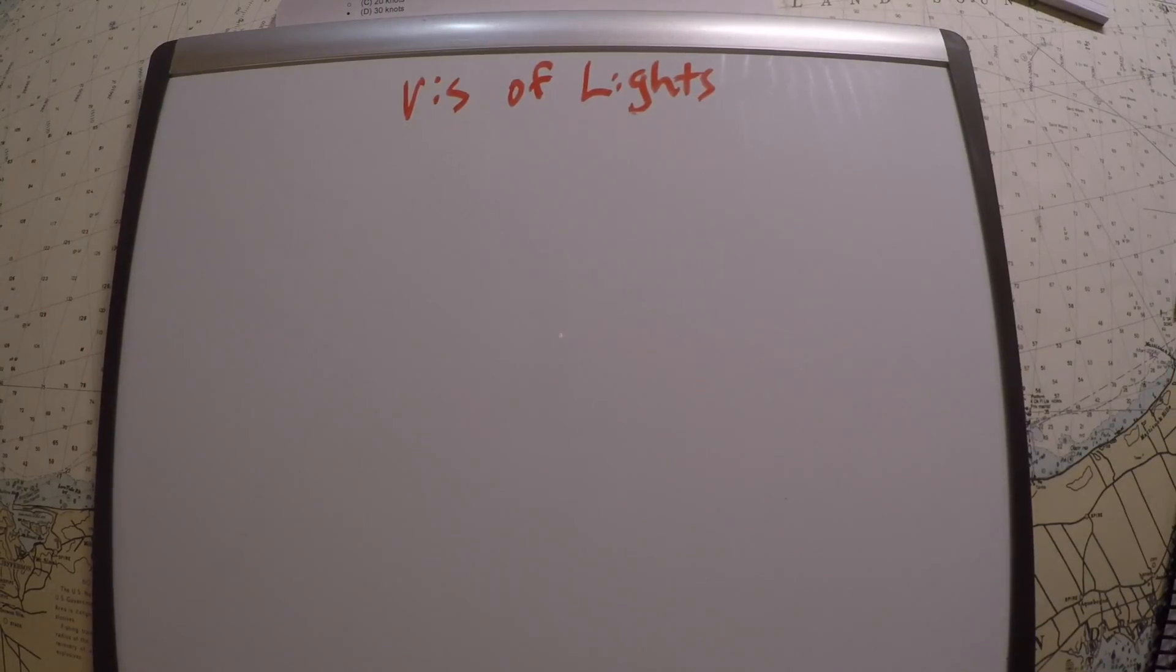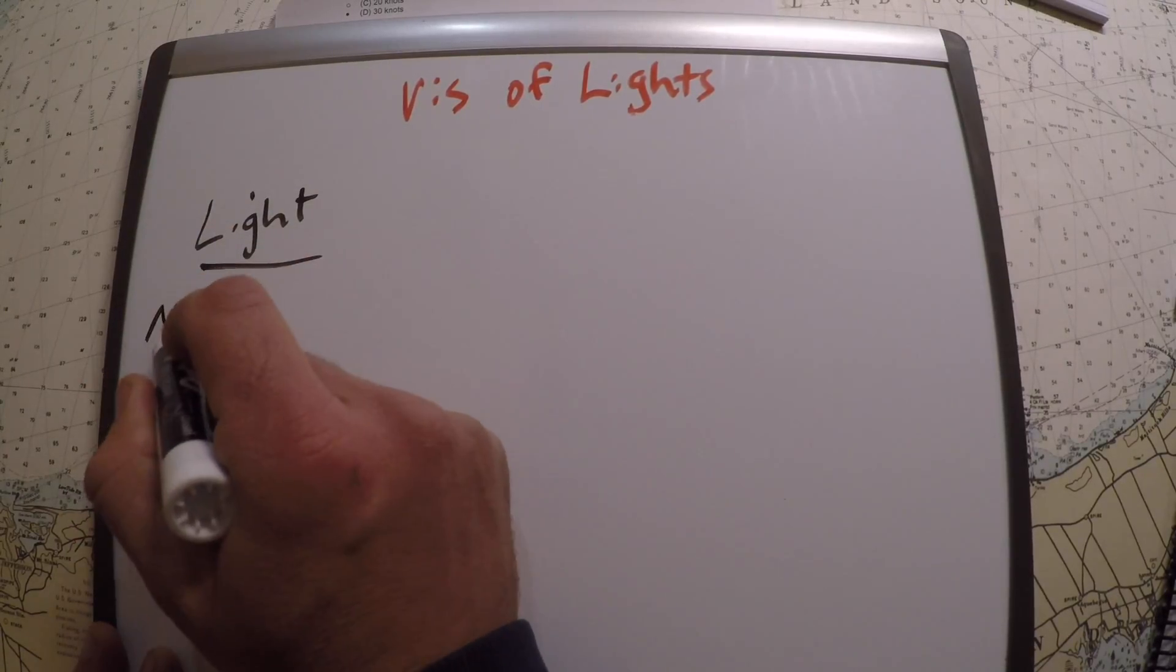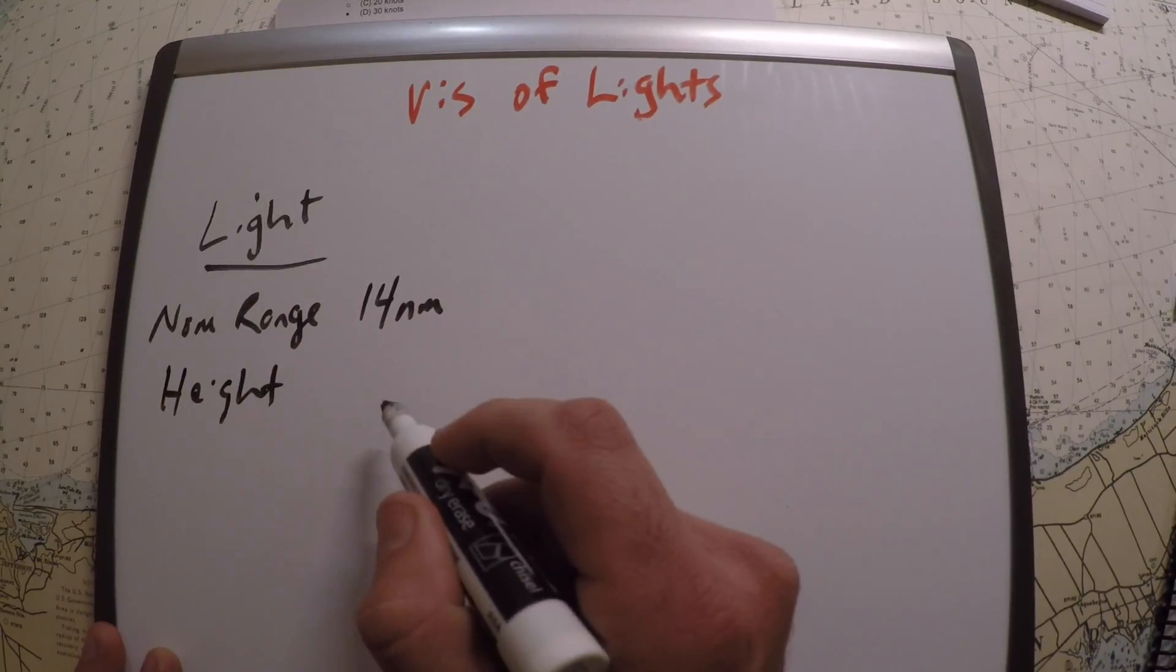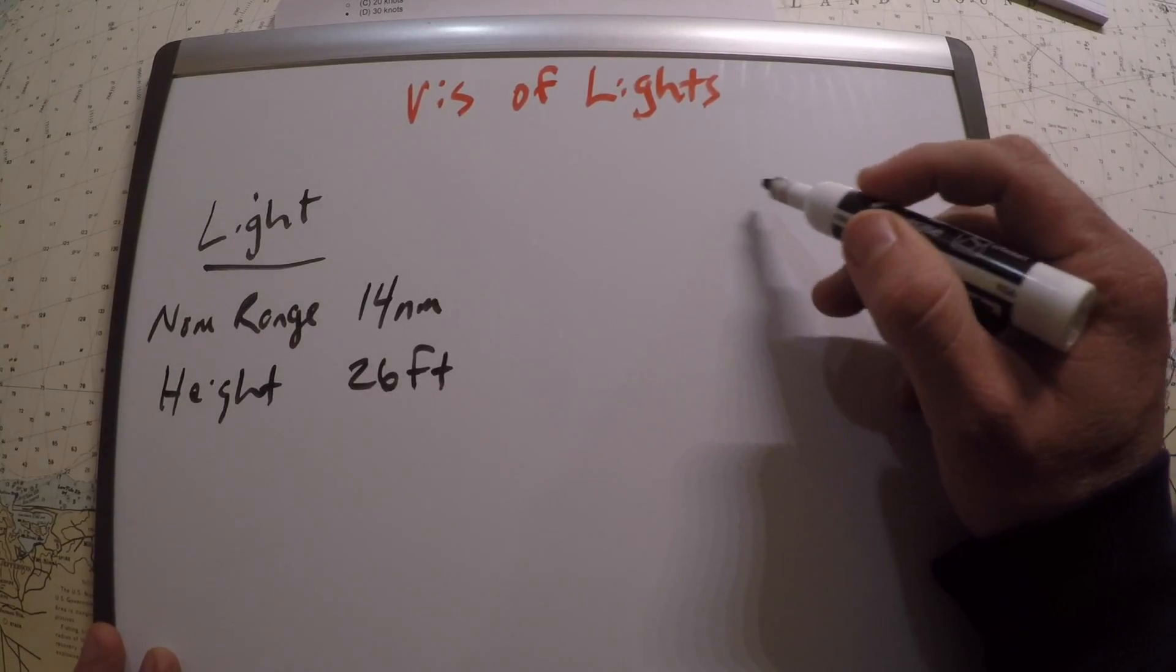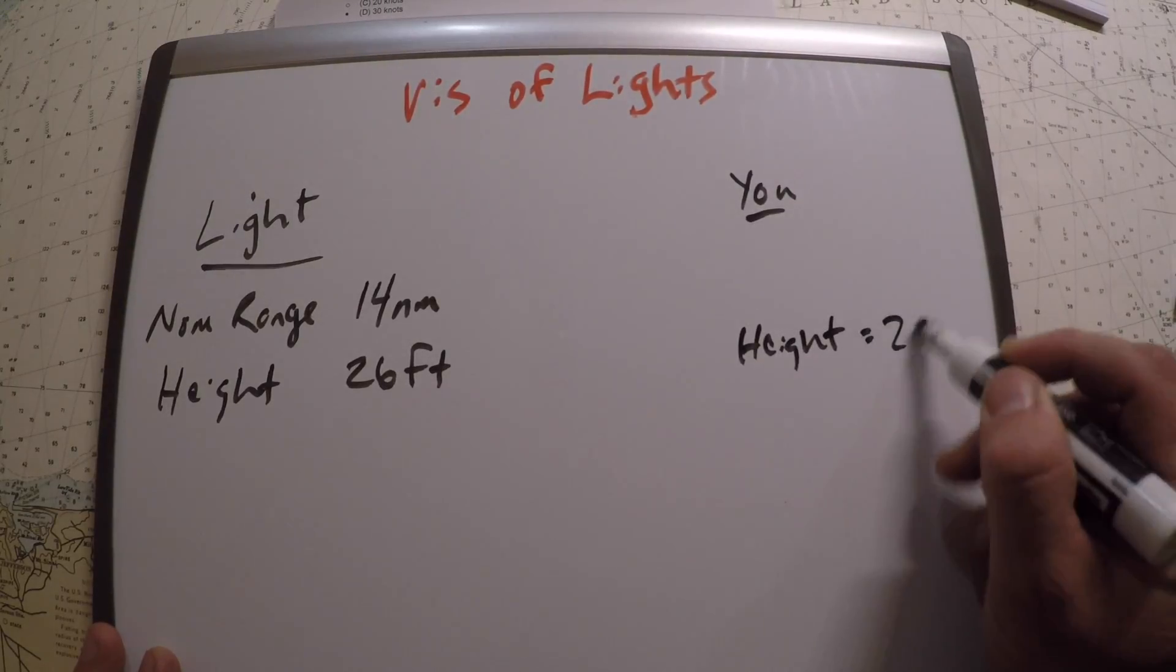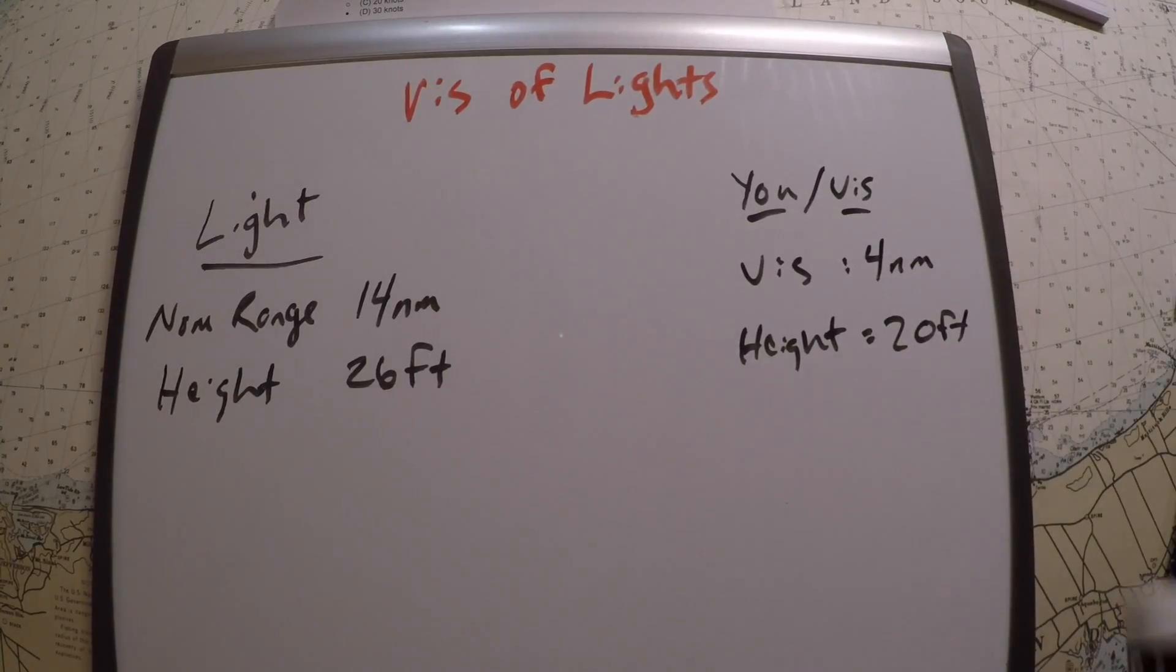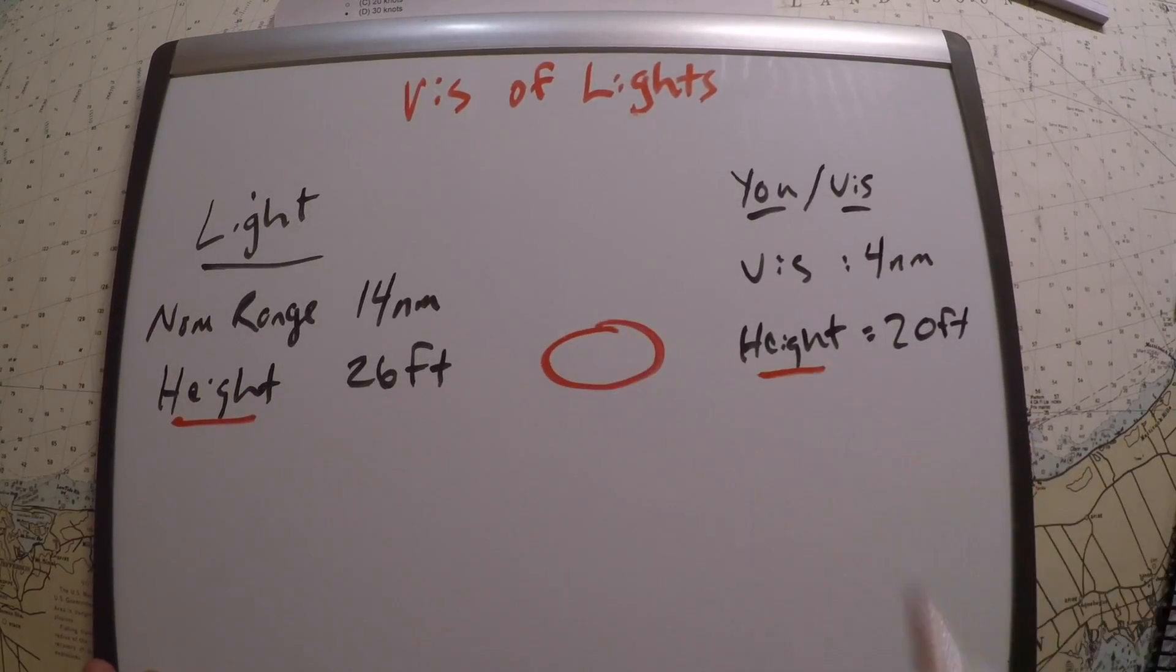So let's write down the information from the problem. The light itself had a nominal range of 14 nautical miles and it had a height of 26 feet. And then some other information: you had a height of 20 feet and the visibility was 4 nautical miles. I wrote it this way because we're going to take a look at this height and this height and come up with that geographic range.